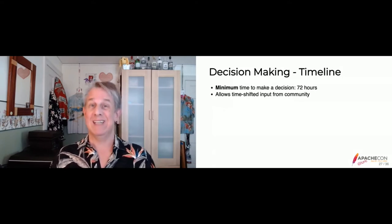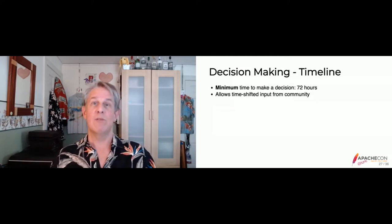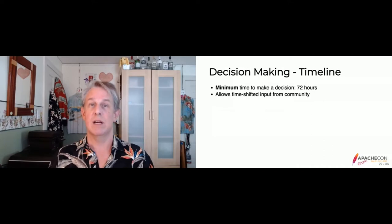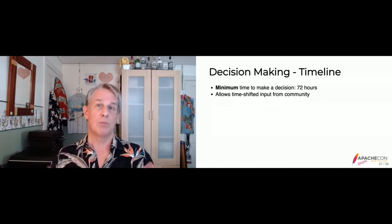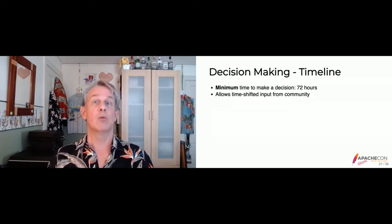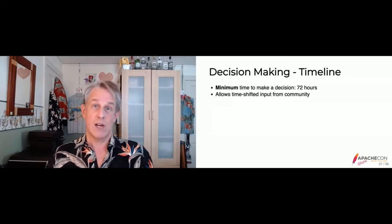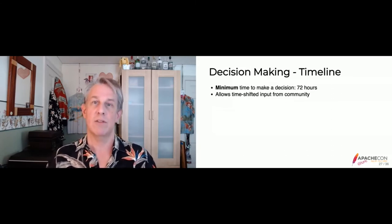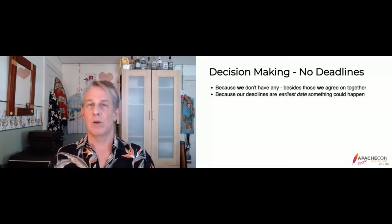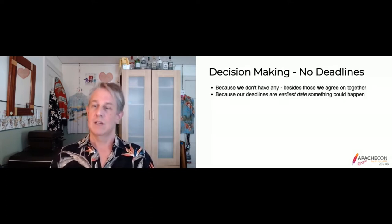We don't really have deadlines in Apache projects — only ones that we agree on together. Some projects make great use of roadmaps and publishing and discussing them. That's the project's desire, agreed on by consensus. But the only thing driving those deadlines — for wanting a release next year or features done next month — is that the people doing the work want to have those deadlines. That's an important part of our decision-making: letting the community have their say.